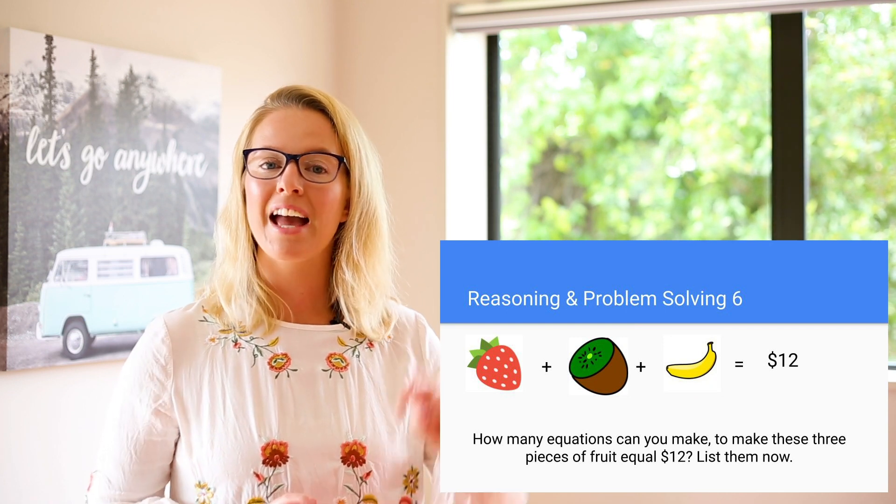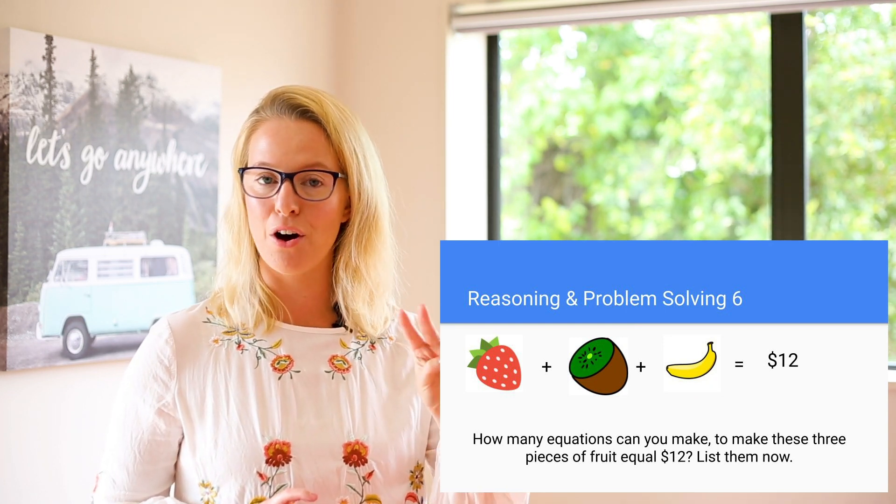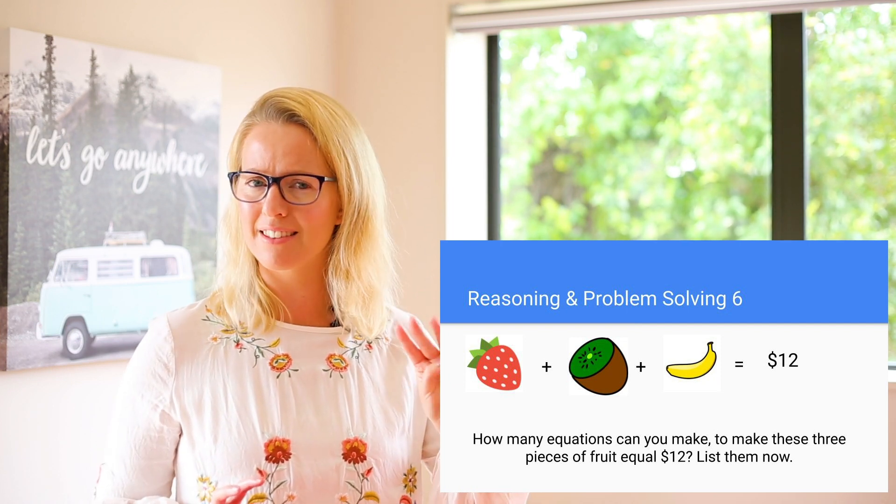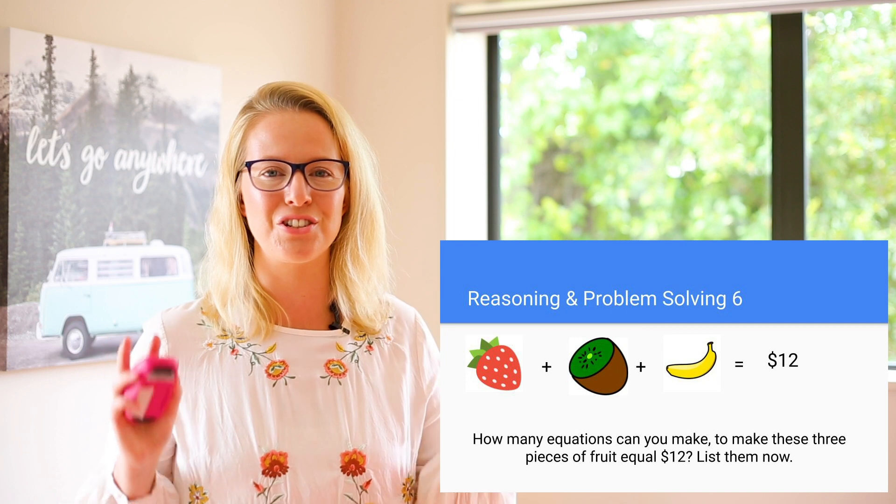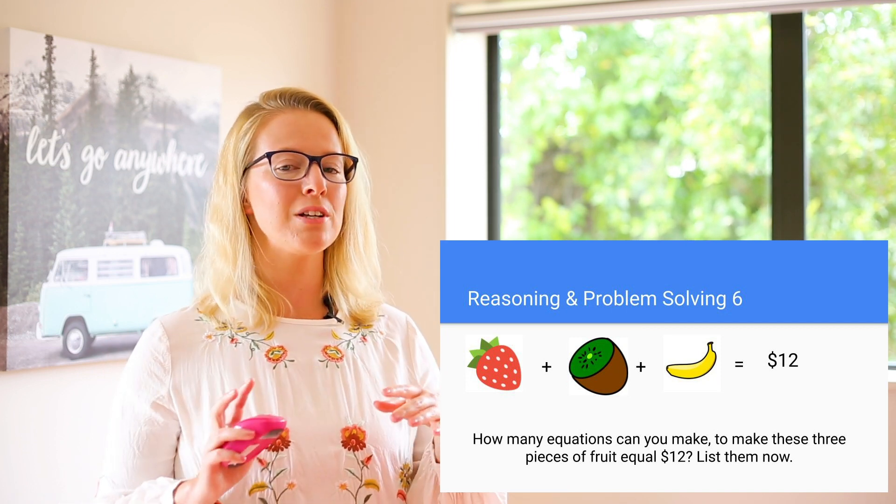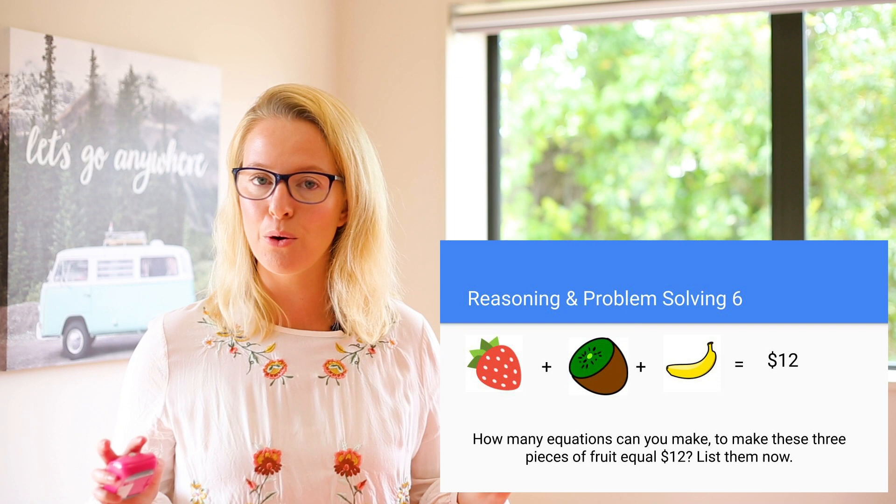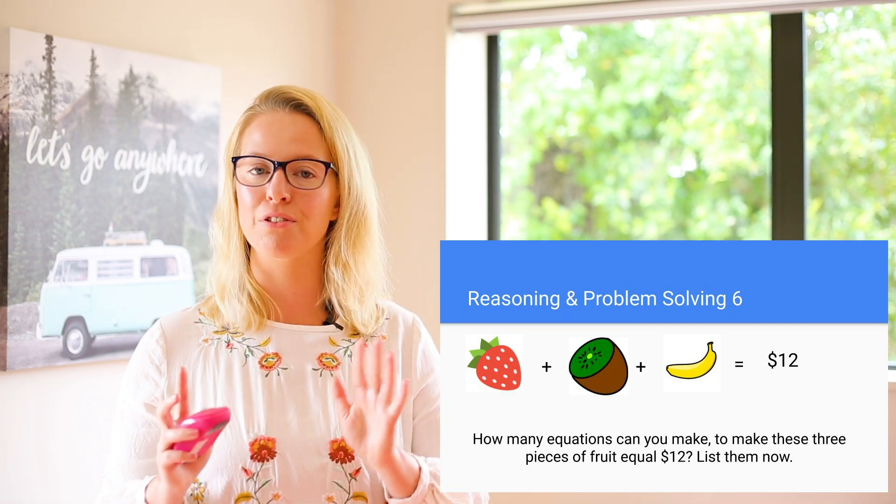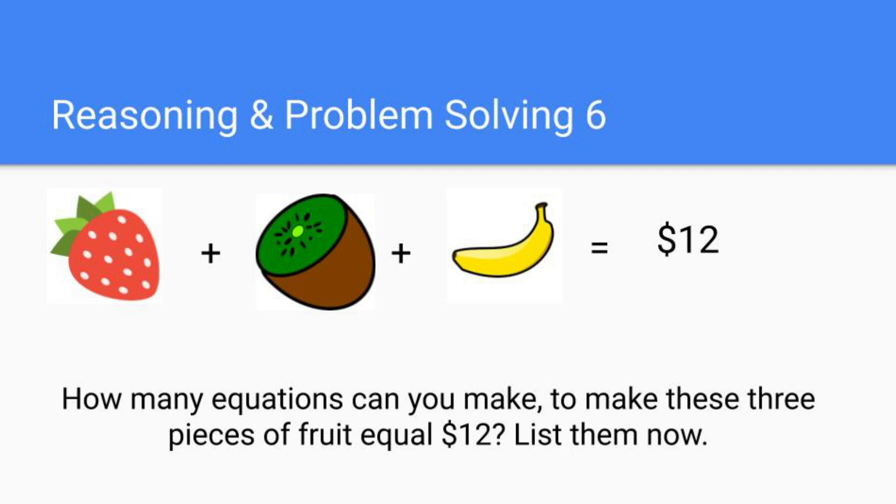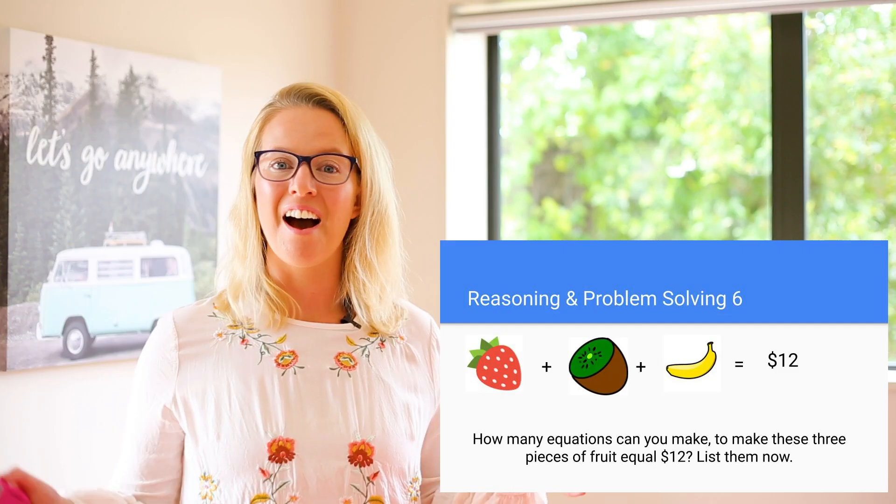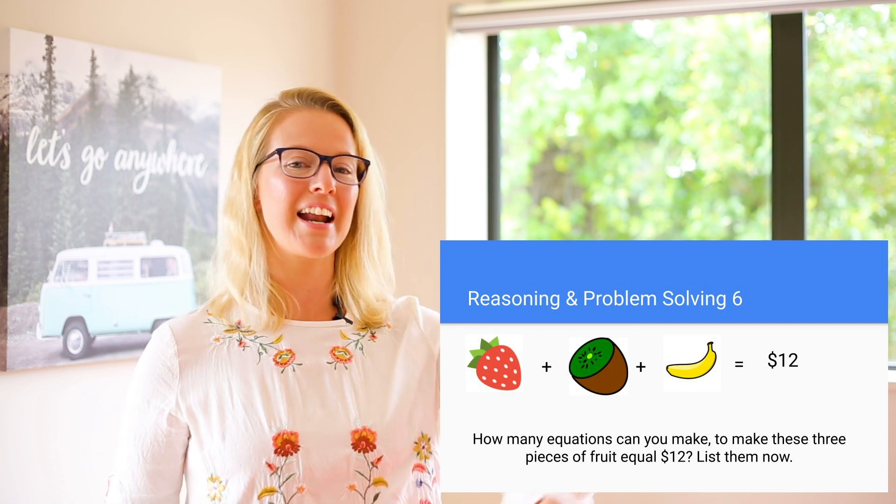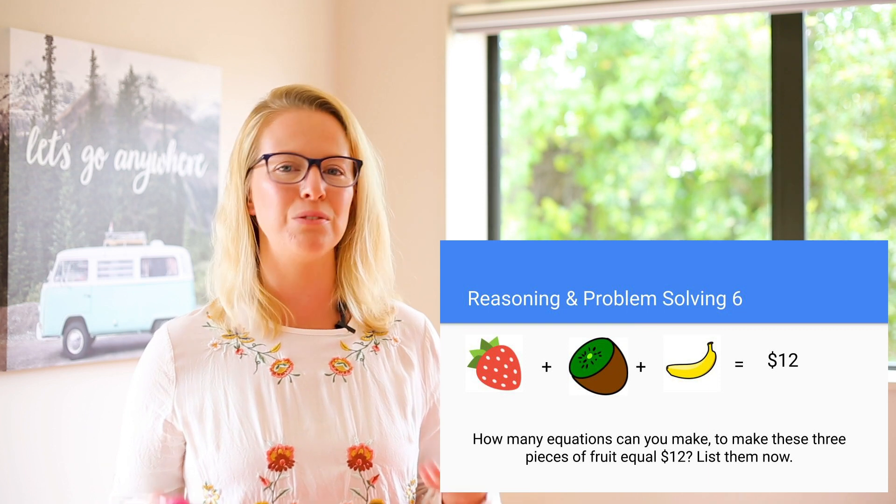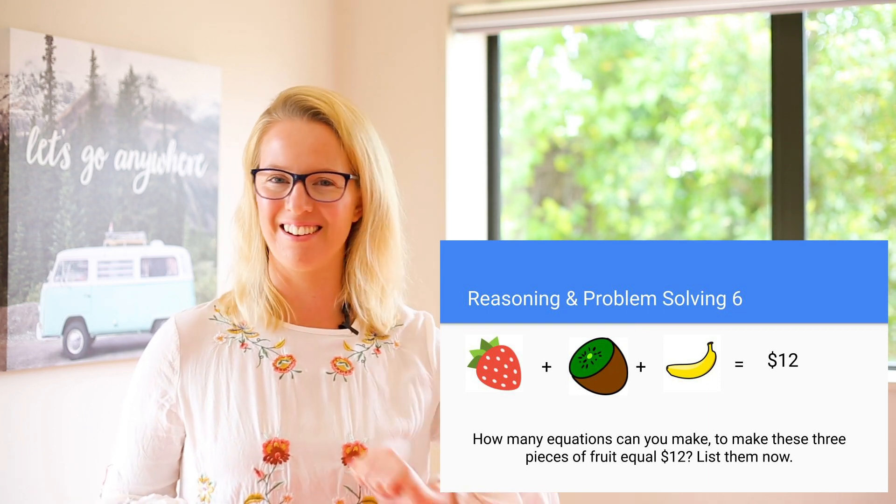Okay, now we have three different pieces of fruit. And these are really expensive pieces of fruit because those three together cost twelve dollars. What the question is asking you here is to come up with as many equations as you can to make these three pieces of fruit equal twelve dollars. Off you go. Okay, how did you do? You might have a whole page full of equations making those pieces of fruit equal twelve dollars. Well done guys.